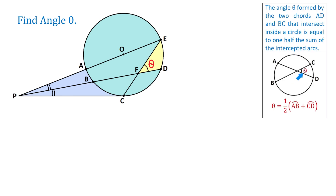If we have an angle theta formed by the intersection of two chords AD and BC, then to find the measure of this angle, we need to add the measures of the intercepted arcs AB and CD and divide the result by two. So in our figure, to find the measure of angle theta, we need to add the measures of the intercepted arcs BC and ED and divide the result by two.